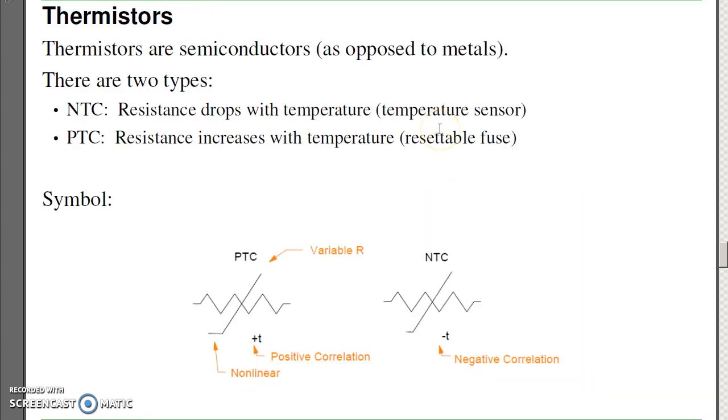A second type of sensor is a thermistor. Thermistors are made out of semiconductors, as opposed to metals. There's two types of thermistors, the NTCs, negative temperature coefficient, and PTC, positive temperature coefficient. These are non-linear devices. They have two different uses.